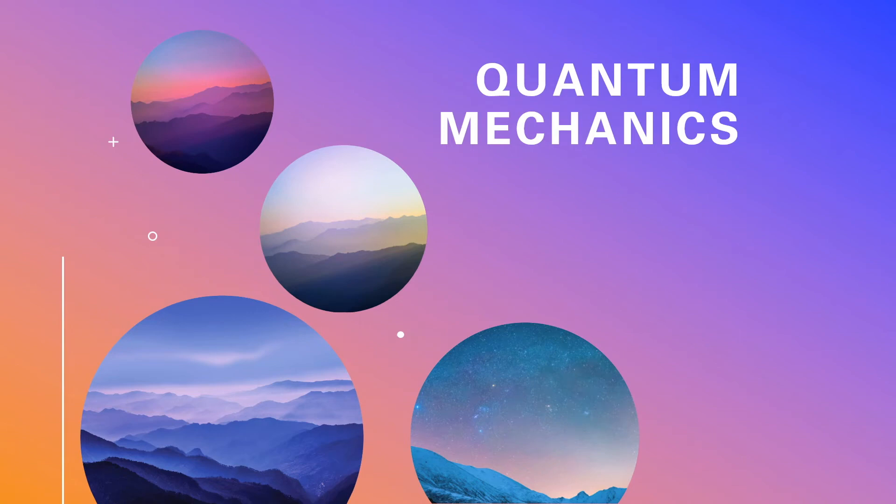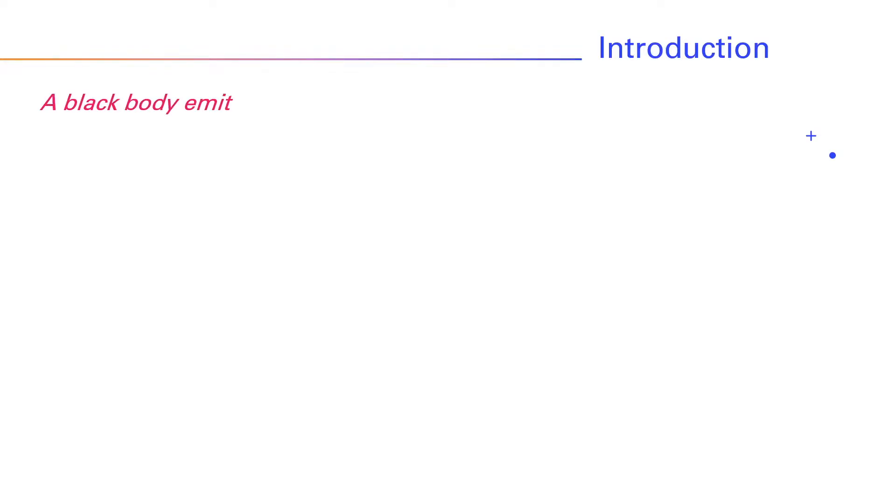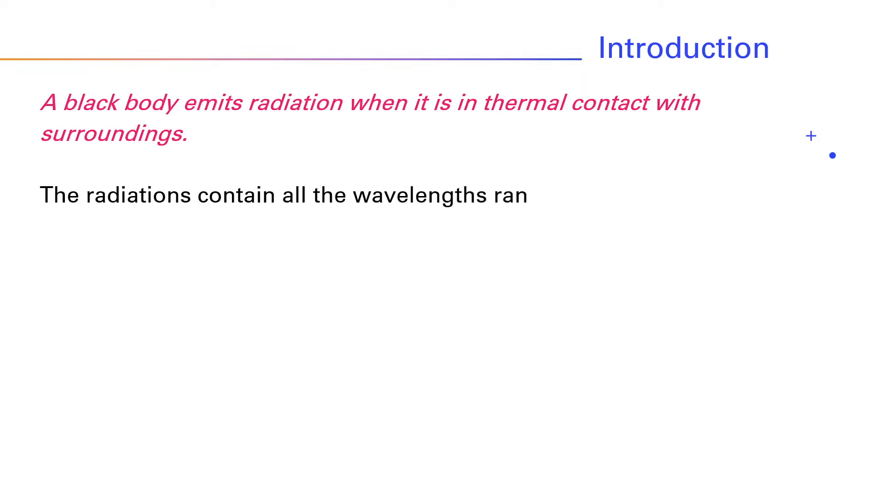Let us take a brief review of some theories that led to the foundation of quantum mechanics. So first is black body radiation. A black body emits radiation when it is in thermal contact with surroundings. The radiations contain all the wavelengths ranging from zero to infinite.